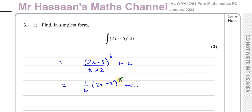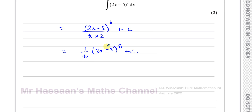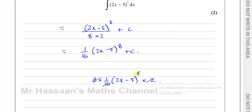And if you want to check you've done the right thing, you simply differentiate this. If you differentiate this, you have 8 times 1 over 16 times (2x minus 5) to the power of 7. You multiply by the power, take 1 from the power, and because you have a function inside the function, you multiply by the differential of what's inside, which is 2, giving 8 times 2 which is 16 over 16, which is 1. So you're left with (2x minus 5) to the power of 7, exactly what we started with. You can always check by differentiating your answer.